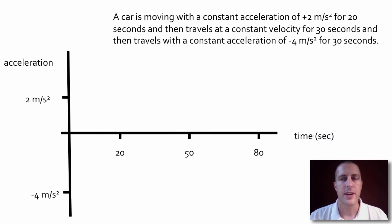Now with an acceleration time graph, we don't do a whole lot with those in this class. But here we could graph the acceleration that's described in this problem. So here we have our axes, acceleration on the vertical axis, time on the horizontal axis. And we're looking for a car moving with a constant acceleration of positive 2 meters per second squared for 20 seconds. So we'll draw a line that looks like this. Then it travels at a constant velocity for 30 seconds. Constant velocity means 0 acceleration for the next 30 seconds.